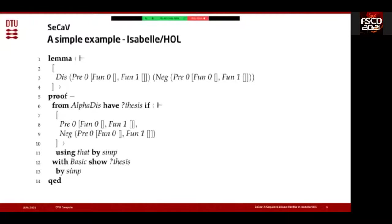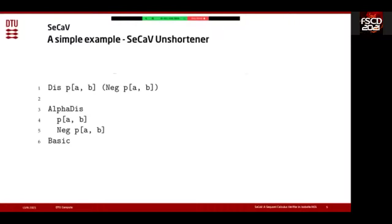This can be daunting syntax for students unfamiliar with Isabelle/HOL, since all the bolded words are Isabelle/HOL commands. So we also have a simpler syntax called the SecAV unshortener syntax, because we also have an unshortener that can turn this syntax into the first syntax. Here you just write the formulas and proof rules, and the system automatically translates. You write a disjunction of predicate P taking arguments a and b, and negated P taking a and b, then simply state which proof rules to apply. Applying AlphaDis splits the disjunction into a list of two formulas, and we finish the proof using the basic proof rule.